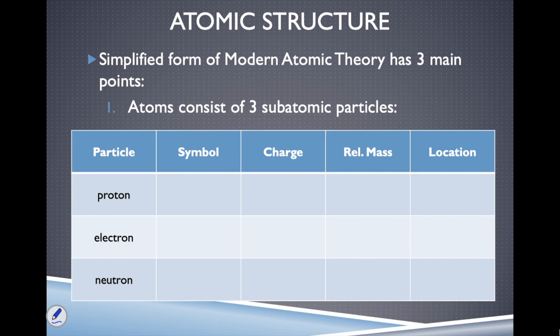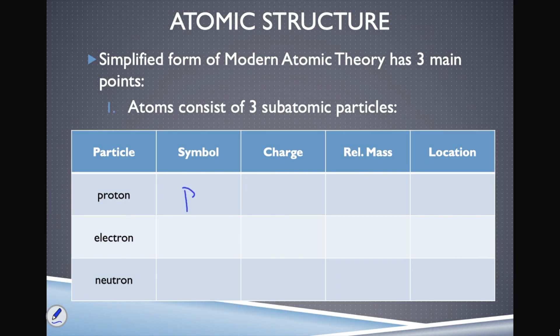In chemistry, we're always looking for ways to abbreviate words or names using symbols. Our symbol for a proton is a P with a little plus sign. Why does it have a plus sign? Because every proton has a charge of positive one.